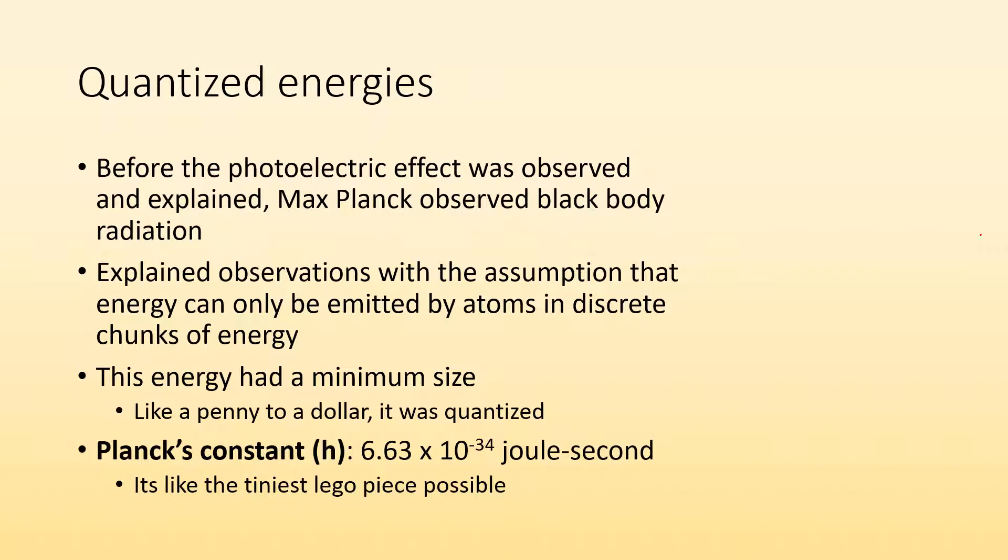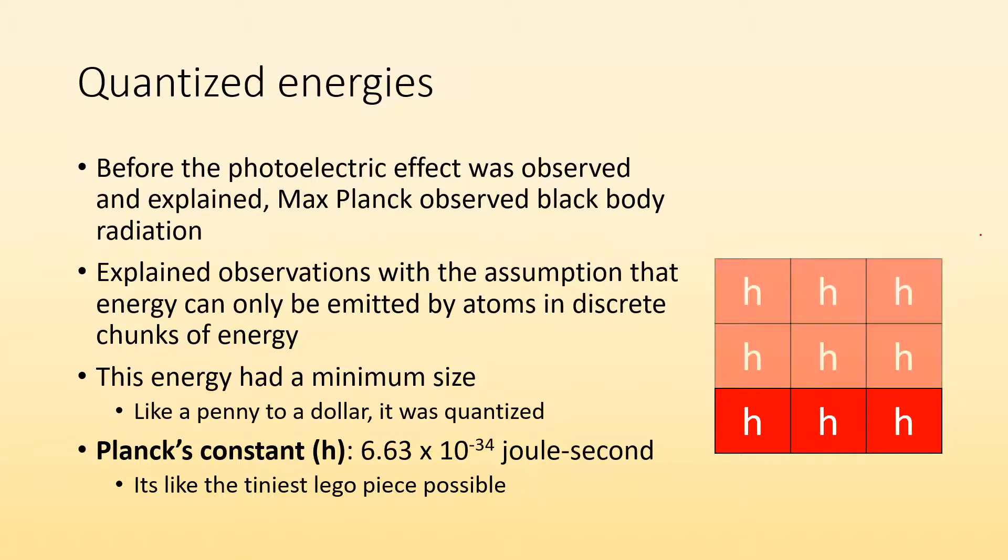So Planck's constant, which is 6.63 times 10 to the negative 34 joule seconds, this is going to be our penny to the dollar, but for energy. It's the tiniest little Lego piece possible for energy. You can have one little chunk of energy, or you can have a couple, but it's always going to be some multiple of that minimum amount. It's always going to be some multiple of a penny.